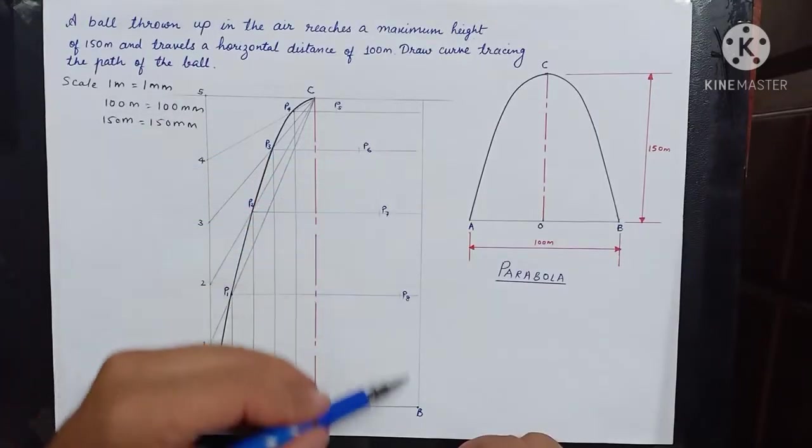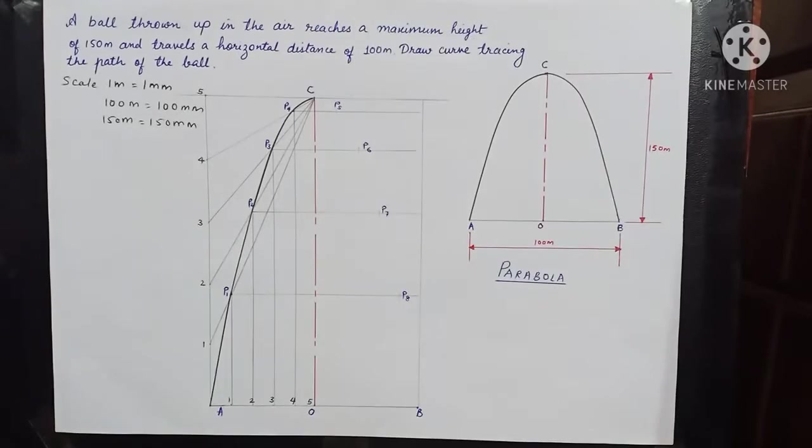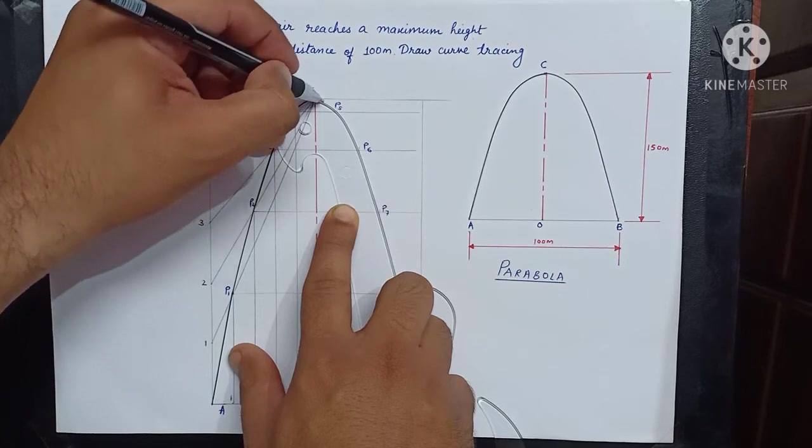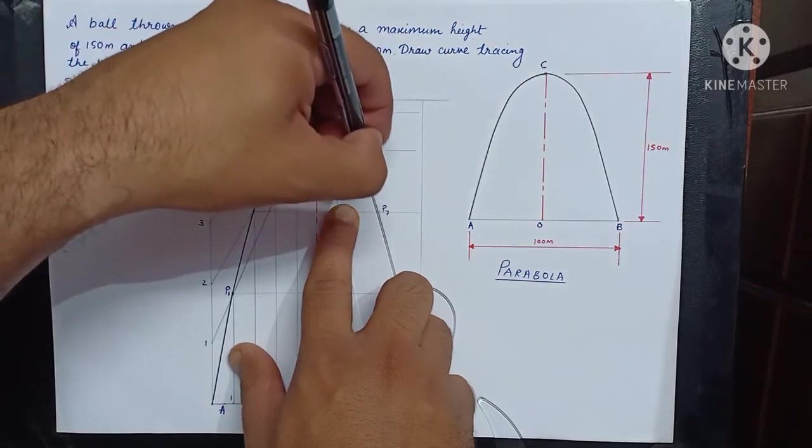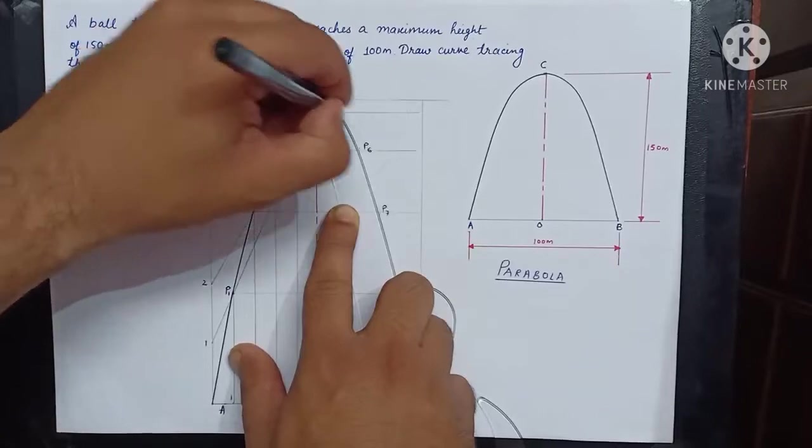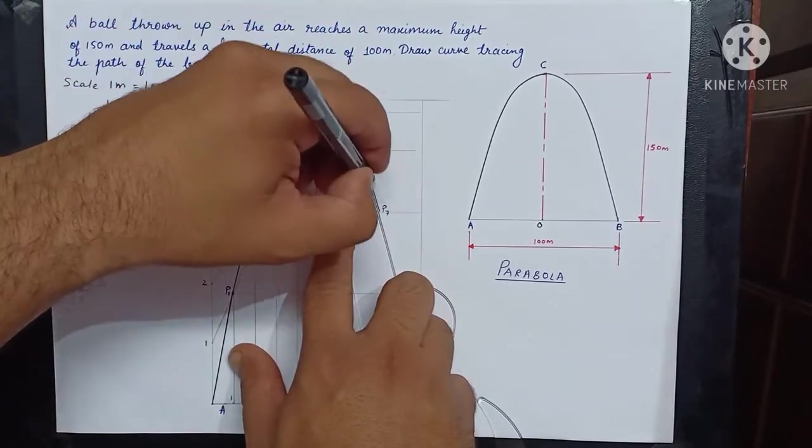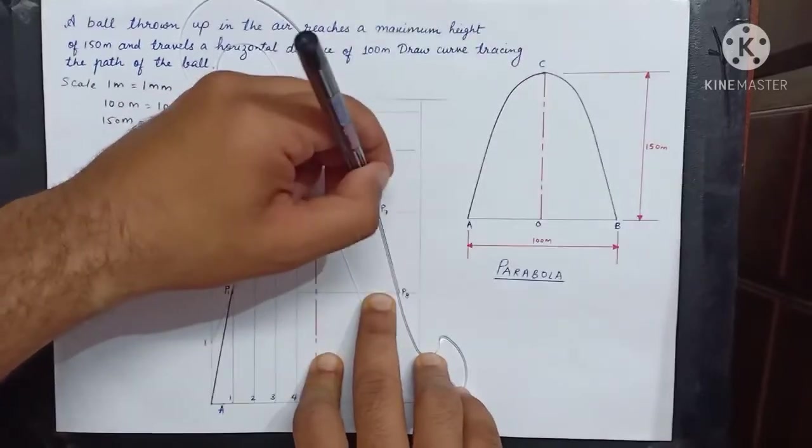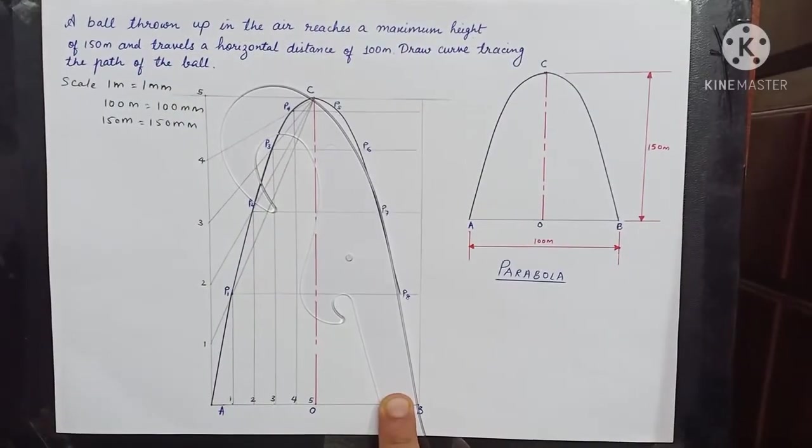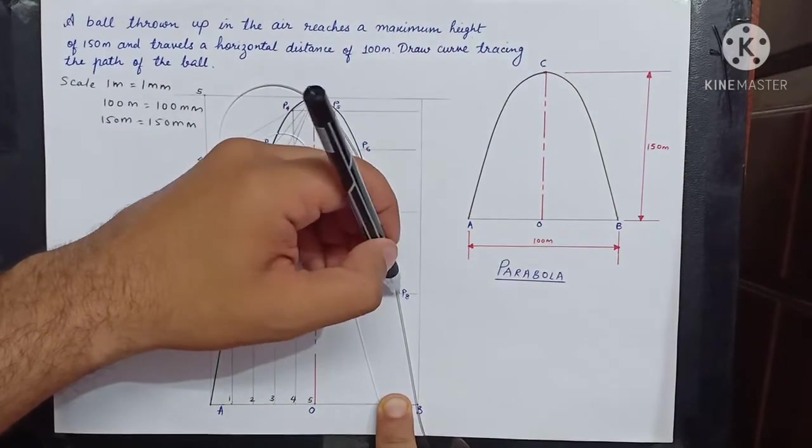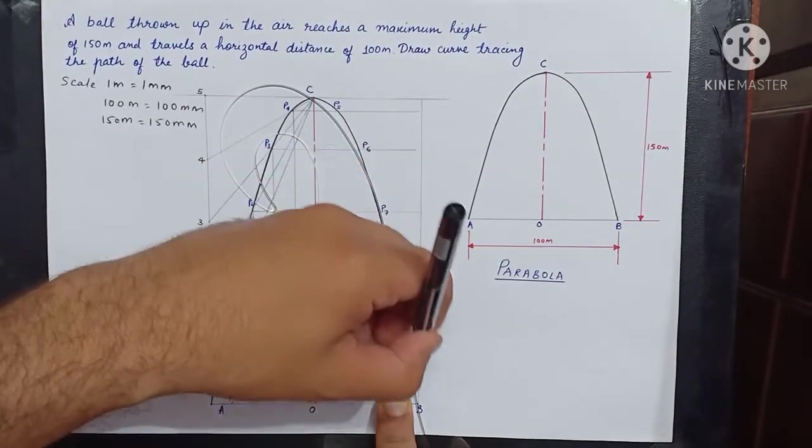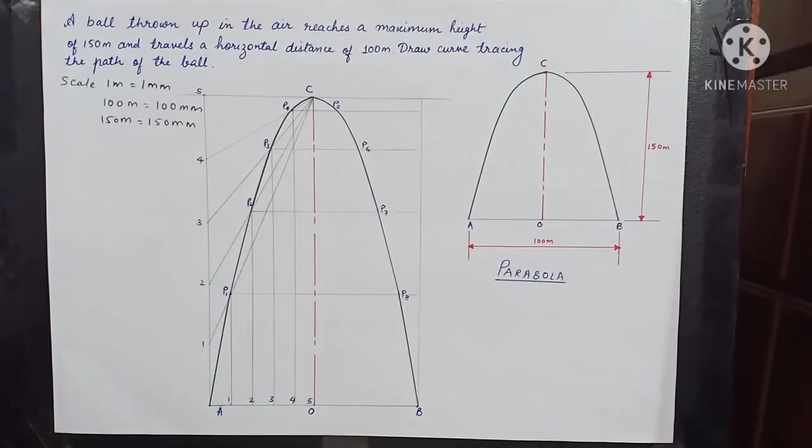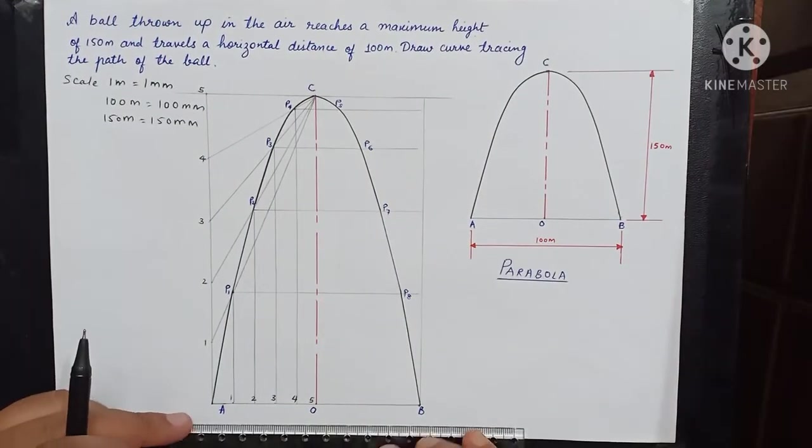Then connecting these points we will get the complete parabola, starting from C and finally P8 to point B. So here we get the complete parabola. Give dimensions.